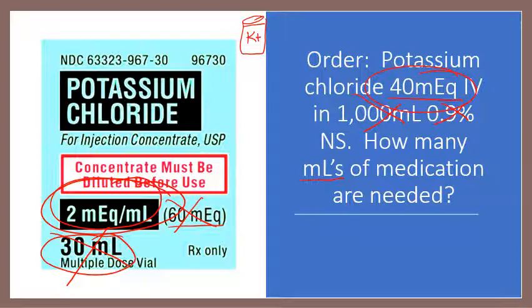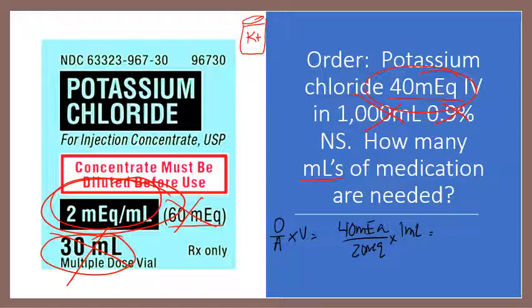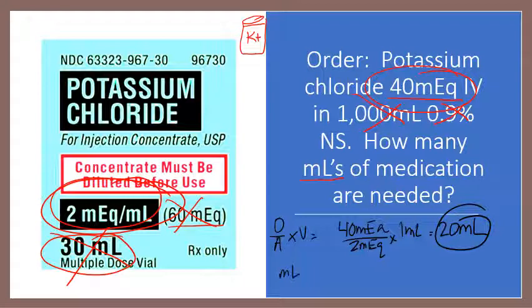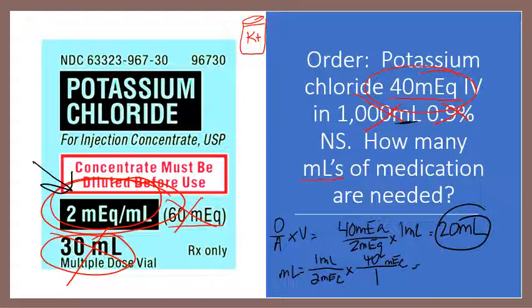Using order over availability times volume: the order is 40 MEQ, available is 2 MEQ per 1 mL. Divide 40 by 2 and you get 20 mL. For dimensional analysis: solving for mL, write 1 mL over 2 MEQ. Place 40 MEQ over 1, cancel units. You end up with 40 over 2, which equals 20 mL.